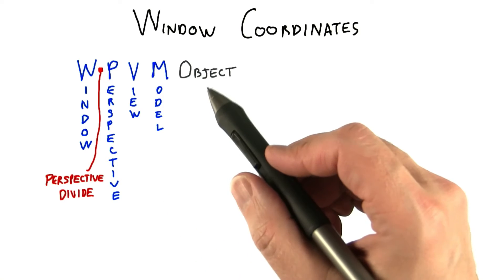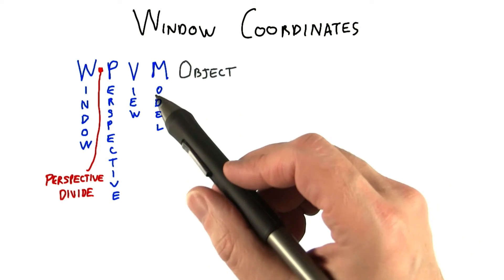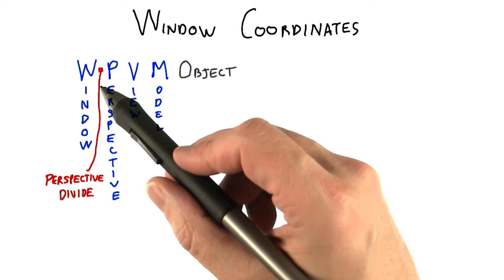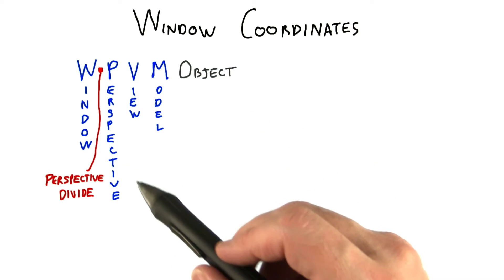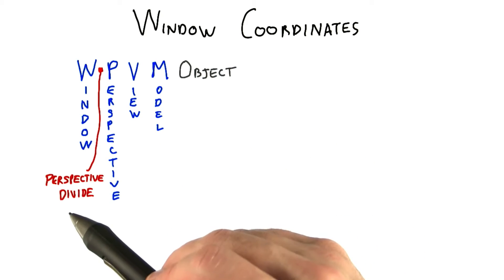We've had a series of transforms applied to the object: the object's model transform, followed by the view and projection transforms generated by the camera. The perspective divide converts from clip coordinates to normalized device coordinates.